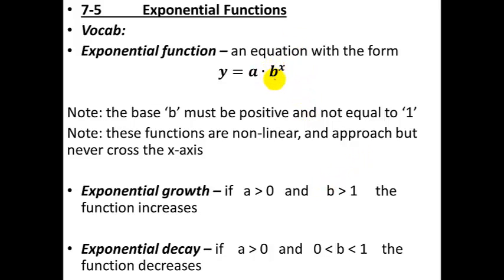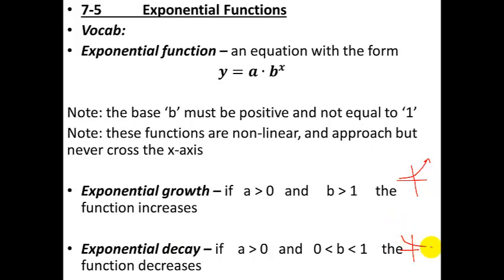If you stick a small number in for b, you're going to have a function that decreases — it'll look like this on a graph, getting smaller. And if you have a large number for b, bigger than 1, it'll be growing, going up like that. So exponential growth is growing really rapidly upward. Exponential decay is decreasing really rapidly downward. In both cases, b is a positive number, but it could be less than 1 or greater than 1, and the exponent will be x.